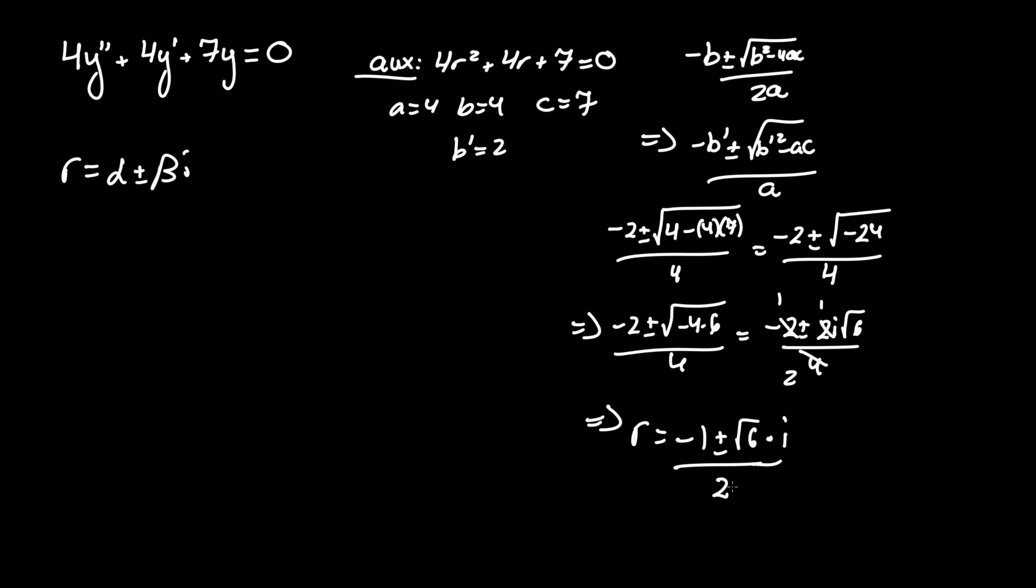And we can quickly see what beta is from this. So r equals negative 1 half plus minus radical 6 over 2 i. Extracting alpha and beta, we can see alpha equals negative 1 half and beta equals radical 6 over 2.